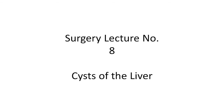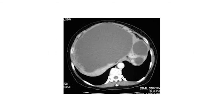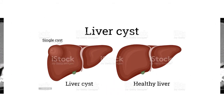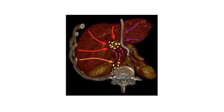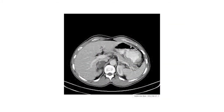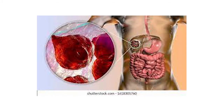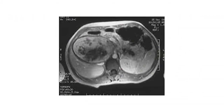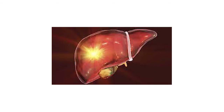Today we are continuing our surgery lecture number eight: cysts of the liver. In this lecture we will see the parasitic cyst — that is the hydatid cyst of the liver — and the non-parasitic cysts such as solitary cyst, multiple cysts, lymphatic cyst, endothelial cyst, blood and degenerative cyst, dermoid cyst, and cystadenomas.